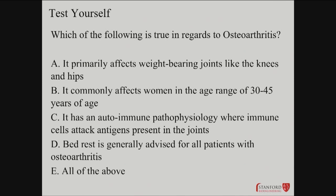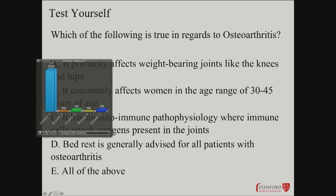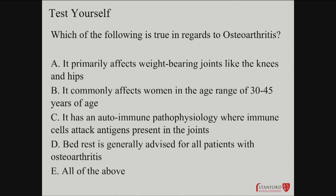Quiz: which of the following are true for osteoarthritis? Primarily affects weight-bearing joints like the knees and hips; commonly affects women in the age range of 30 to 45; it has an autoimmune pathophysiology; bed rest is generally advised; or all of the above. The answer is A — primarily affects weight-bearing joints. The distinction being that the other options — autoimmune pathophysiology, the 30 to 45 age range — those are characteristics closely related to rheumatoid arthritis, not osteoarthritis. And of course, activity is very helpful, so bed rest would be incorrect.